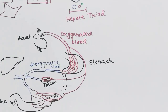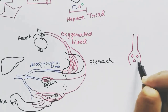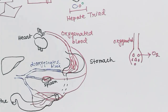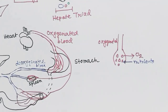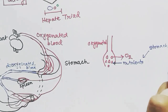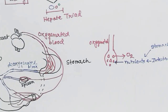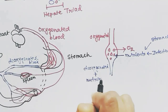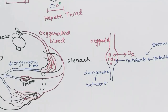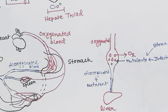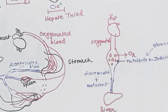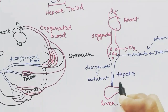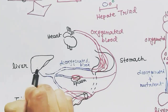During this process, the nutrients from the food being digested in the stomach and intestine will be absorbed into the blood vessels. So oxygen is given to the organs, and nutrients are absorbed into the blood vessel from the stomach and intestine where food is digested. This deoxygenated, nutrient-rich blood vessel will then go into the liver.